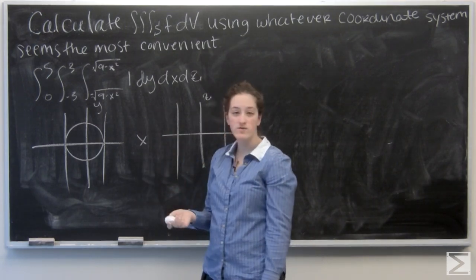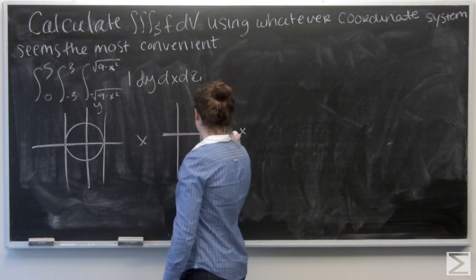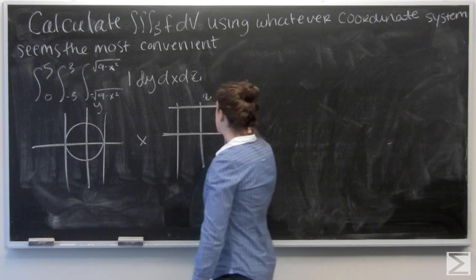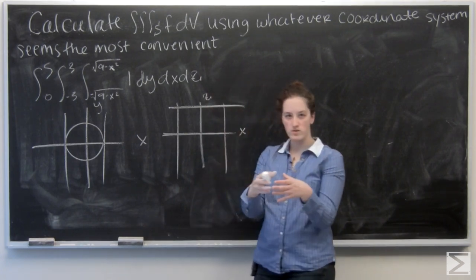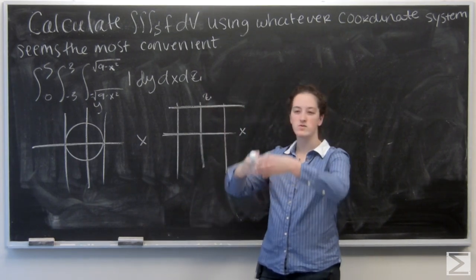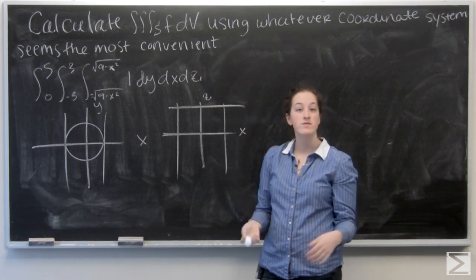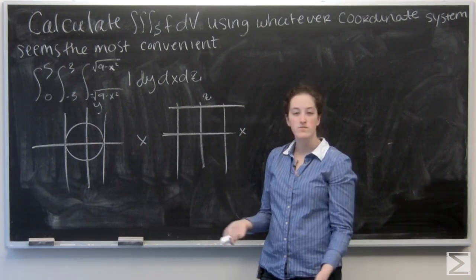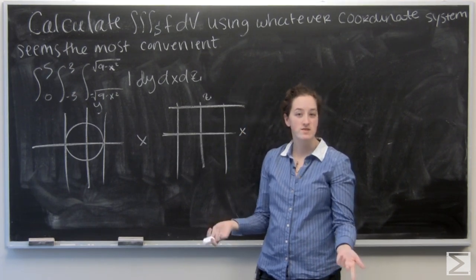And then z goes from zero to five. So I have a circle base that rises just five units up. So I'm looking at a cylinder. So what better coordinate system to use than cylindrical coordinates?